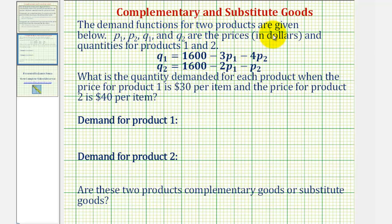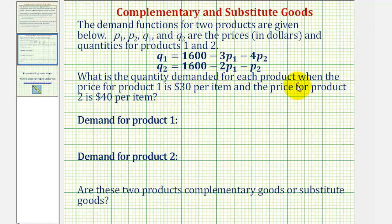The demand functions for two products are given. P sub one, P sub two, Q sub one, and Q sub two are the prices in dollars and the quantities for products one and two. What is the quantity demanded for each product when the price for product one is thirty dollars per item and the price for product two is forty dollars per item?